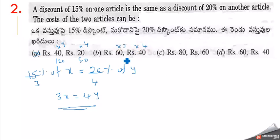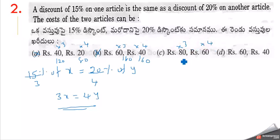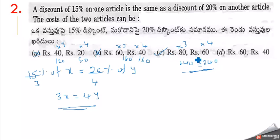60 into 3 is 180, 40 into 4 is 160 — those are not equal, so that's the wrong answer. Third option: 80 into 3 is 240, and 60 into 4 is 240. These are equal, so the answer is C, the correct answer.